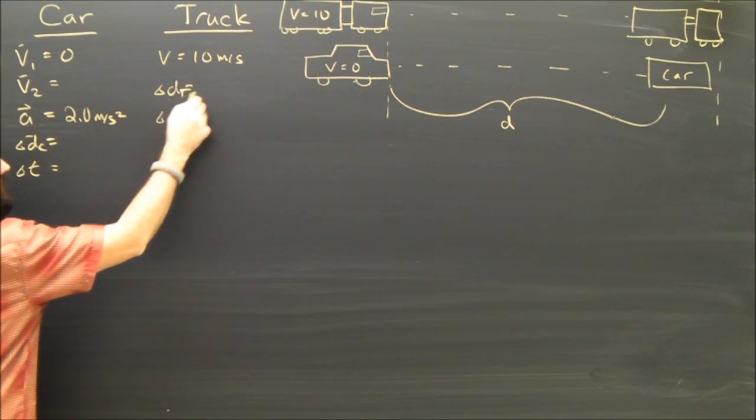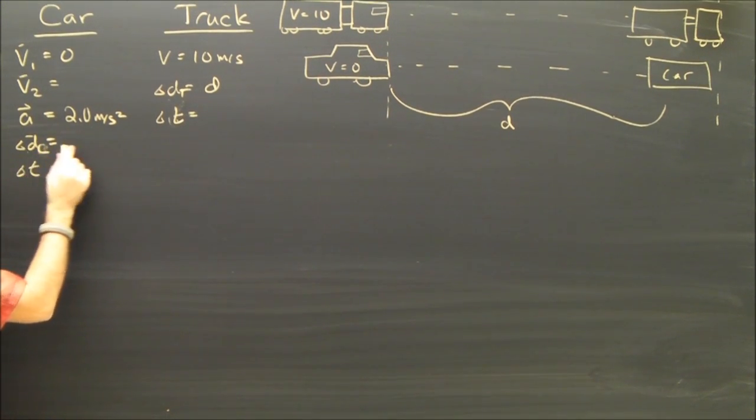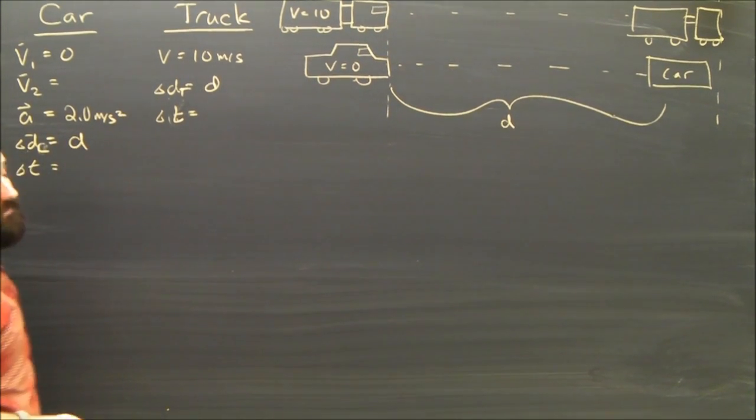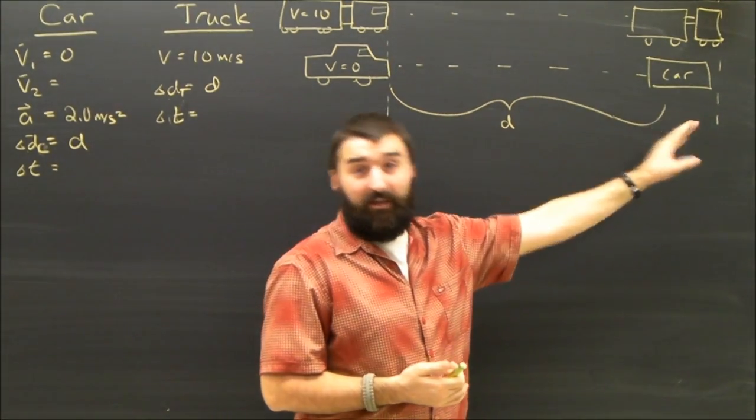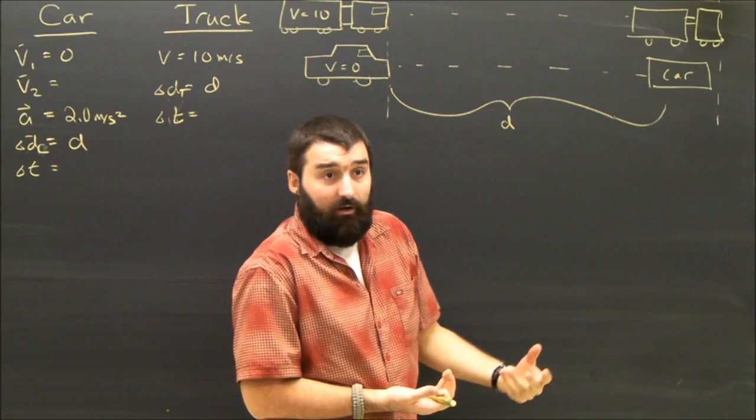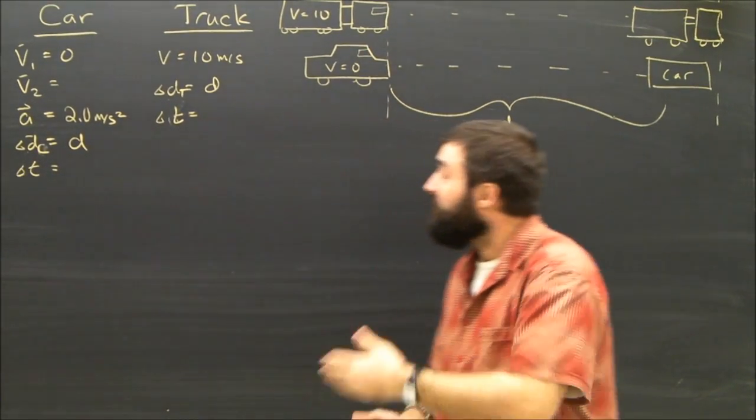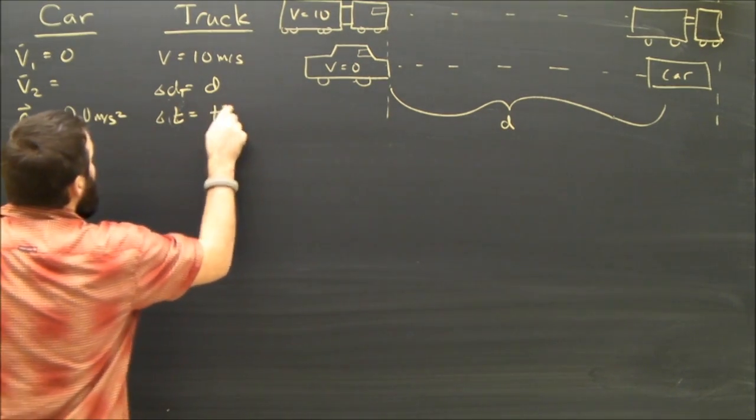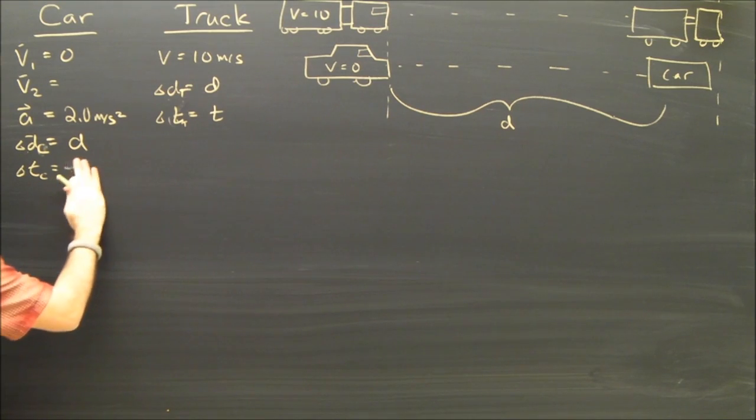So I'm going to write the displacement of the truck equals D. And I'm going to write the displacement of the car. This is a C here. The displacement of the car, I'm also going to call that D. Now, if it takes the car 10 seconds to catch up to the truck, then the truck has been driving for how long? 10 seconds, 20 seconds, 30 seconds, whatever it is. So their times are also going to be the same. So I'm going to call the time for the truck T. I'm going to call the time for the car T.